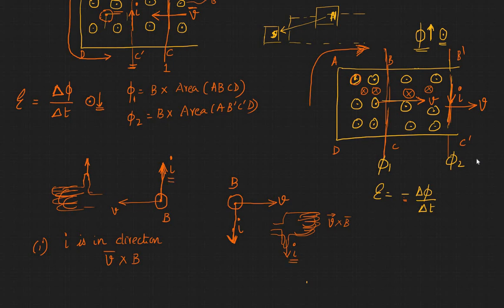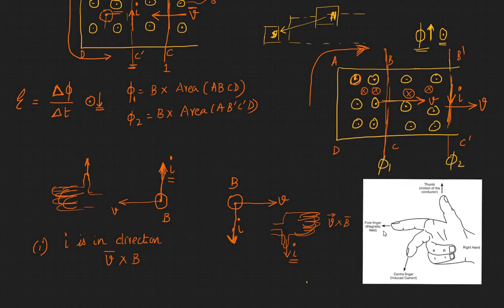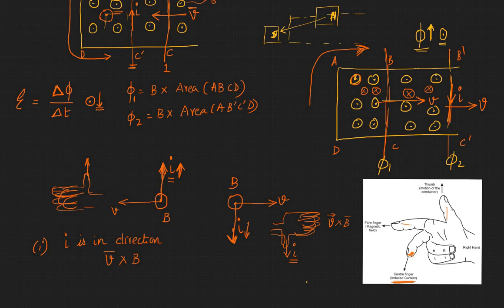The alternate way of thinking about it is using Fleming's right-hand rule. Point your forefinger in the direction of the magnetic field — in this case it's coming outside. Align your thumb to the direction of V, and your middle finger gives you the direction of the induced current. Try it yourself using your right hand — in one case this finger points up, and in the other case it points down, depending on the direction of V and B.